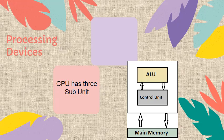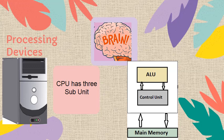The processing device is the CPU, Central Processing Unit, which is the brain of the computer. It has three sub-units. CPU does calculations like addition, subtraction, multiplication, and division in the ALU. ALU stands for Arithmetic Logic Unit. The second sub-unit is the Control Unit. CU stands for Control Unit. The Control Unit tells other parts of the computer what they should do. The third sub-unit is MU, Memory Units. Memory Units store data or information either permanently or temporarily.